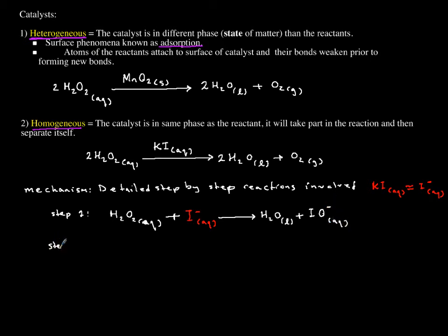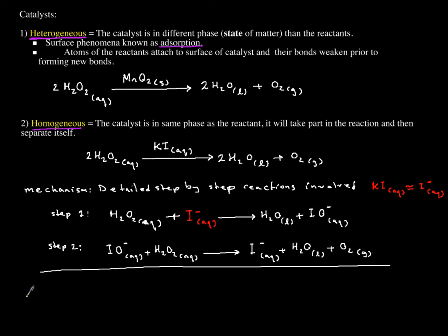The second step, step number two: I'm going to get rid of this newly formed species IO-, which we are going to call it intermediate. So IO- is going to react with another molecule of H2O2 to give you the catalyst back. I- comes back to life plus one more molecule of H2O liquid plus one molecule of O2 gas. Now if you add these two reactions, you will get your overall reaction back.